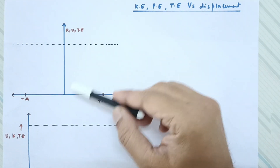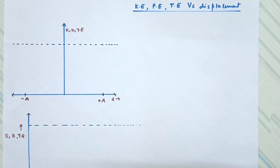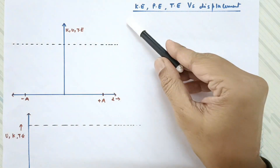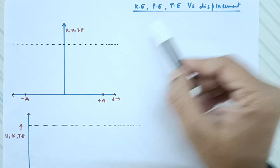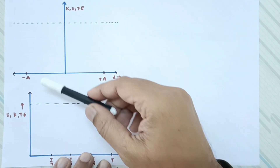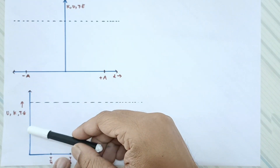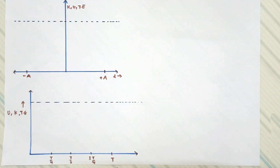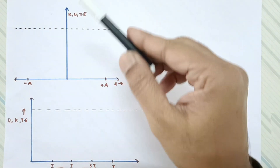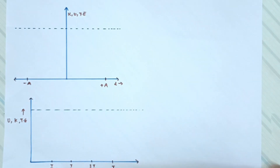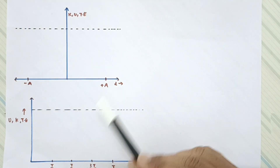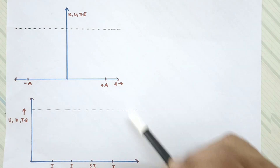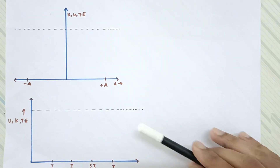We are supposed to look at two graphs: kinetic energy, potential energy, and total energy versus displacement, and again all three energies plotted on the y-axis against time. The energies are taken on the y-axis, while displacement or time is taken on the x-axis.